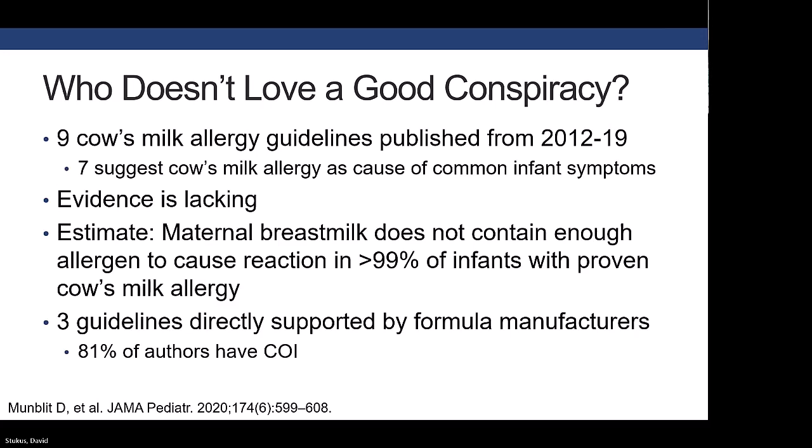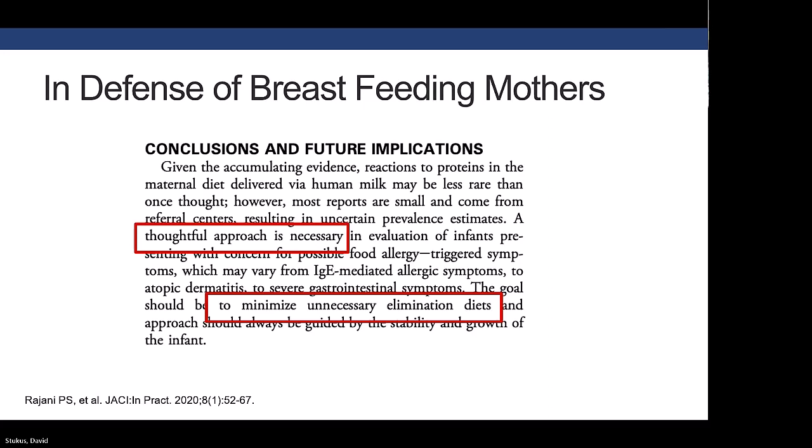This was published in JAMA Pediatrics about three years ago — a deep dive into nine international cow's milk allergy guidelines. They found that for the vast majority, they weren't evidence-based, attributing every symptom imaginable — fussiness, intermittent rash, colic — to cow's milk allergy. It walks through how maternal breast milk rarely, if ever, contains intact protein of the food that person ingested. And to throw in the conspiracy aspect, three of the guidelines were supported by formula manufacturers. I'm not suggesting all guidelines have conspiracies behind them, but it behooves all of us to ask: why do we do the things we do? What does the actual evidence show?